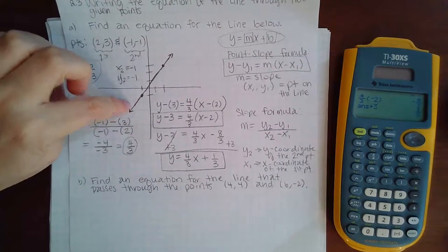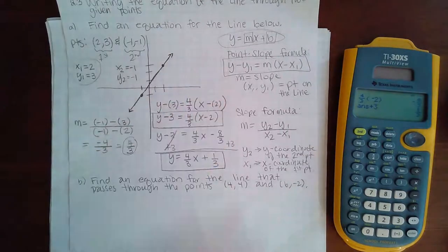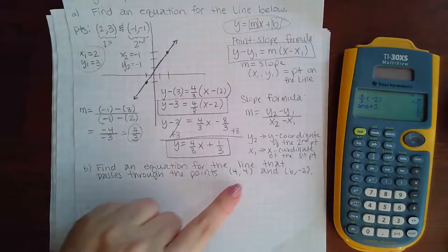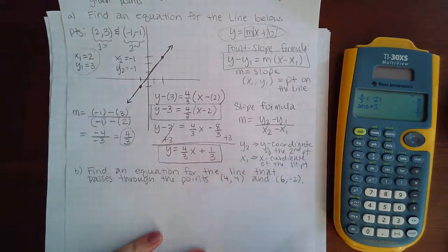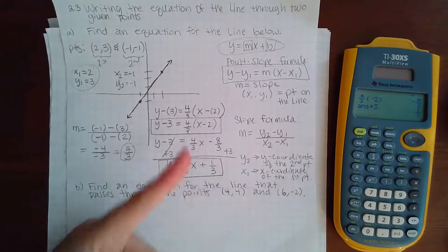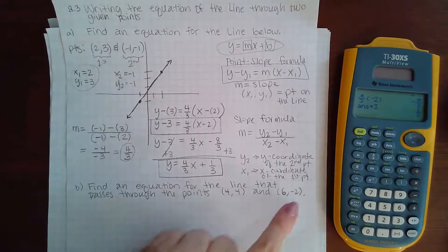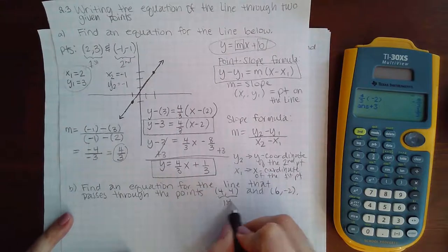Now notice the difference between a and b. In a, they gave you an image, and then you had to write the coordinates for it before you could begin. Part b, they give you the actual points explicitly. They do not give you the picture. So this one is actually a little bit easier in that it has one step less. I don't have to come up with these. I already have them written there.